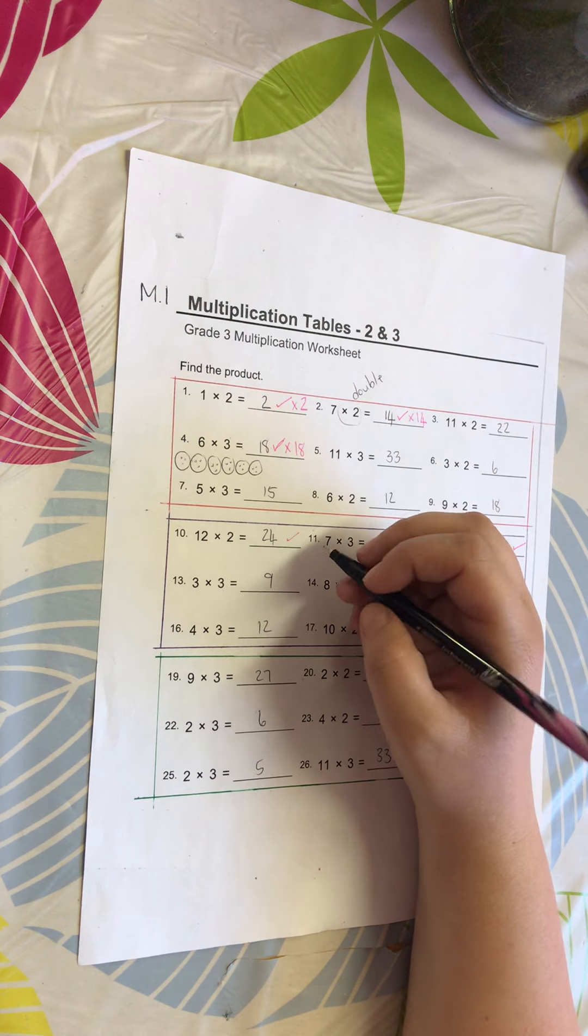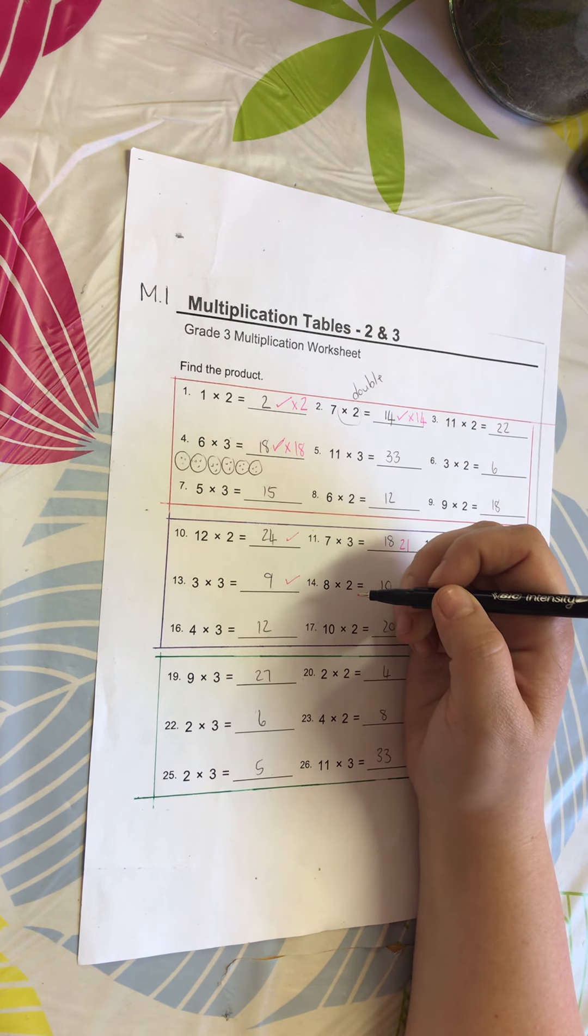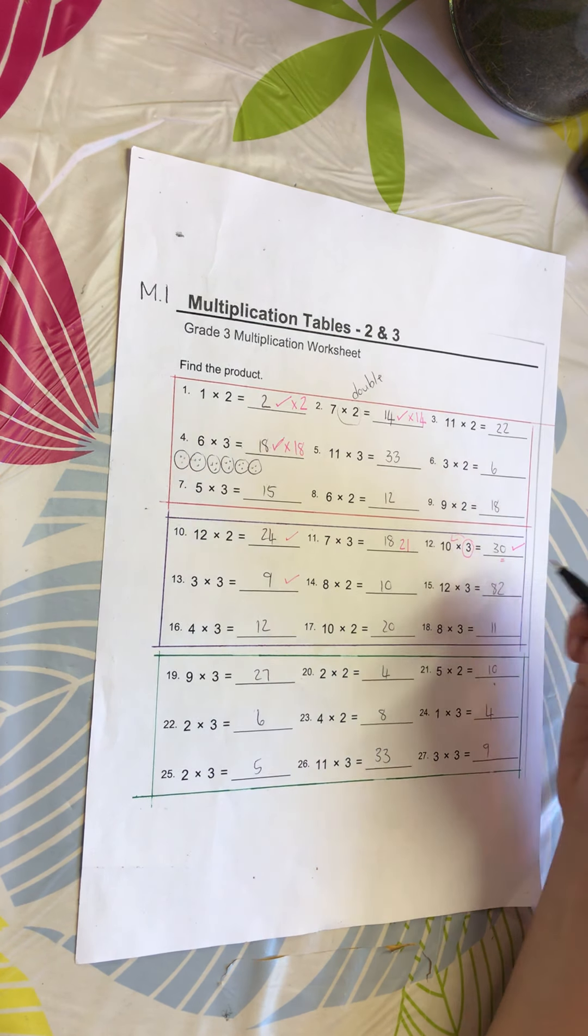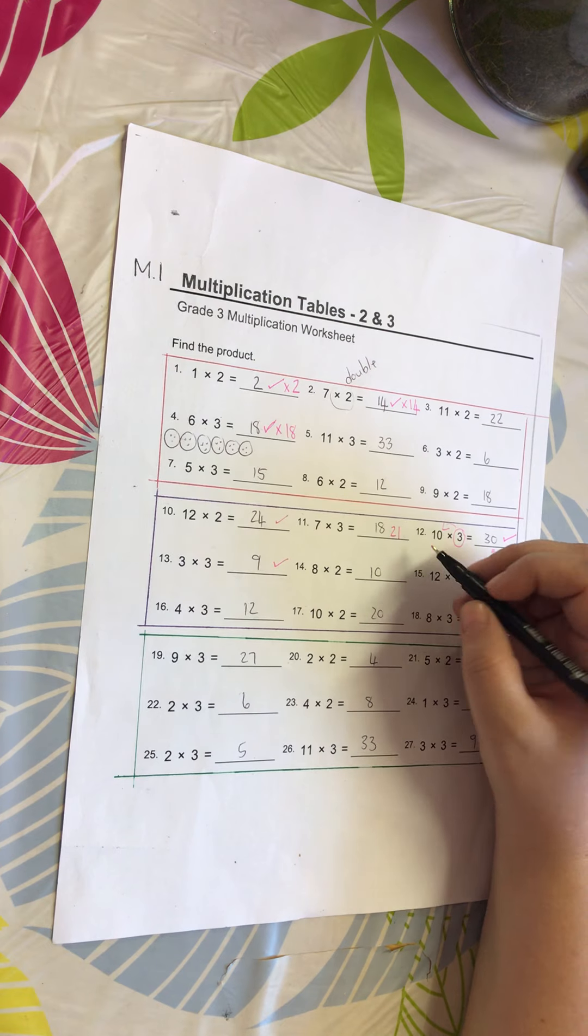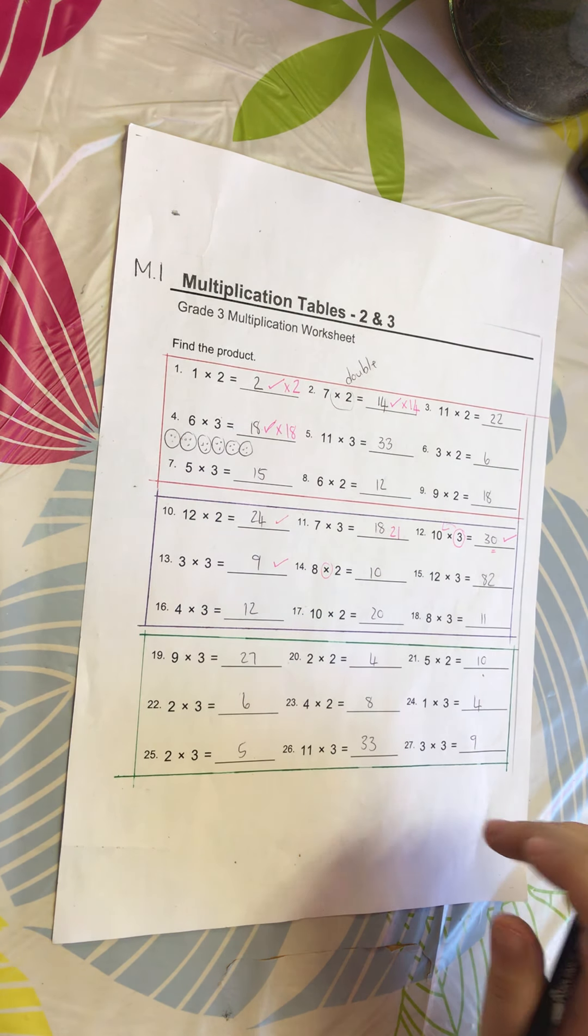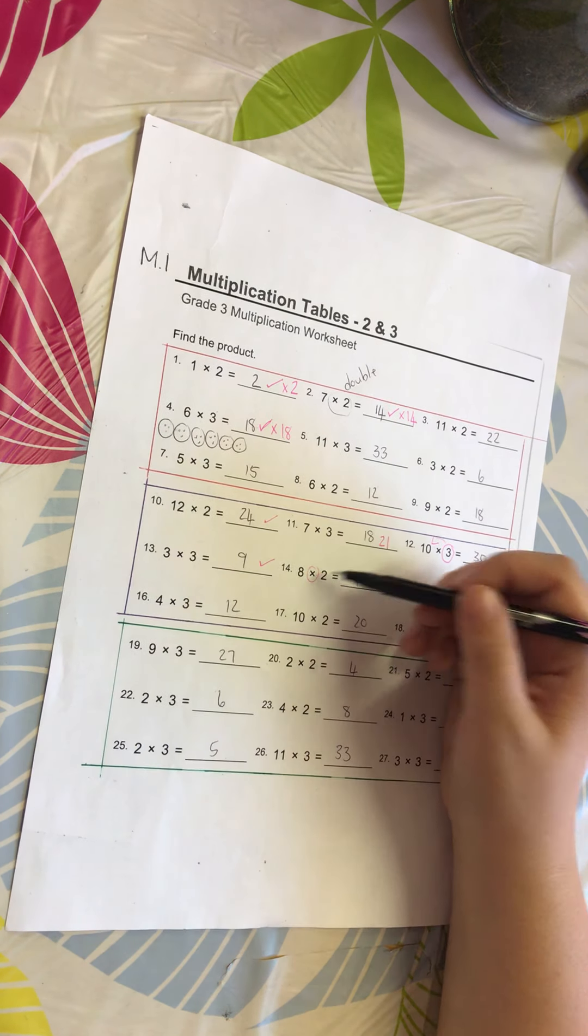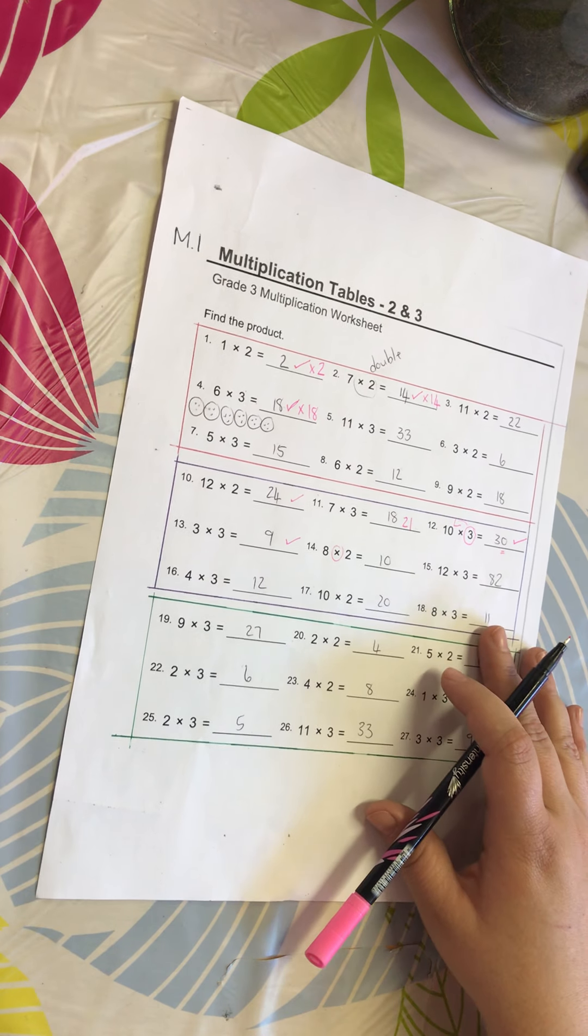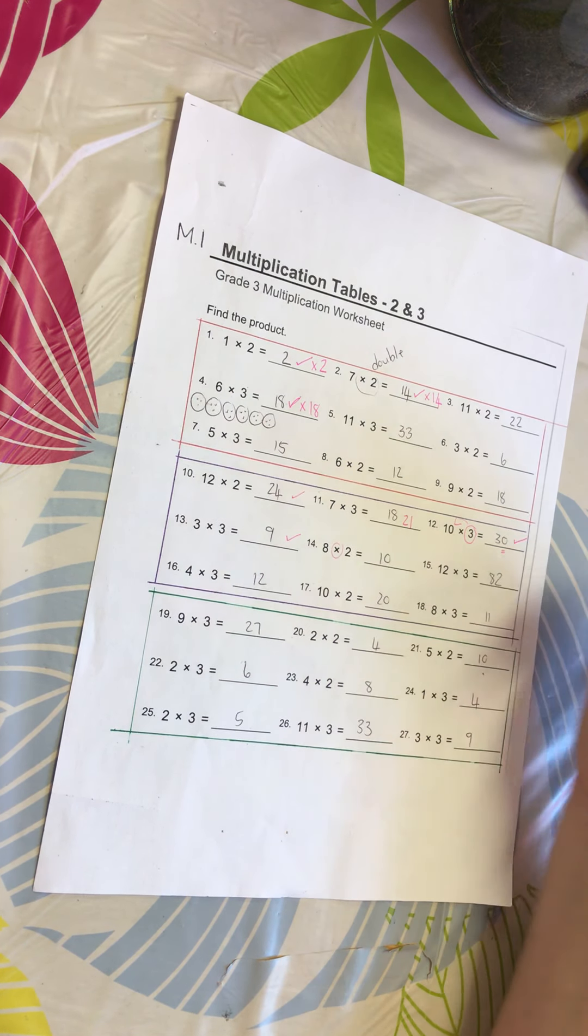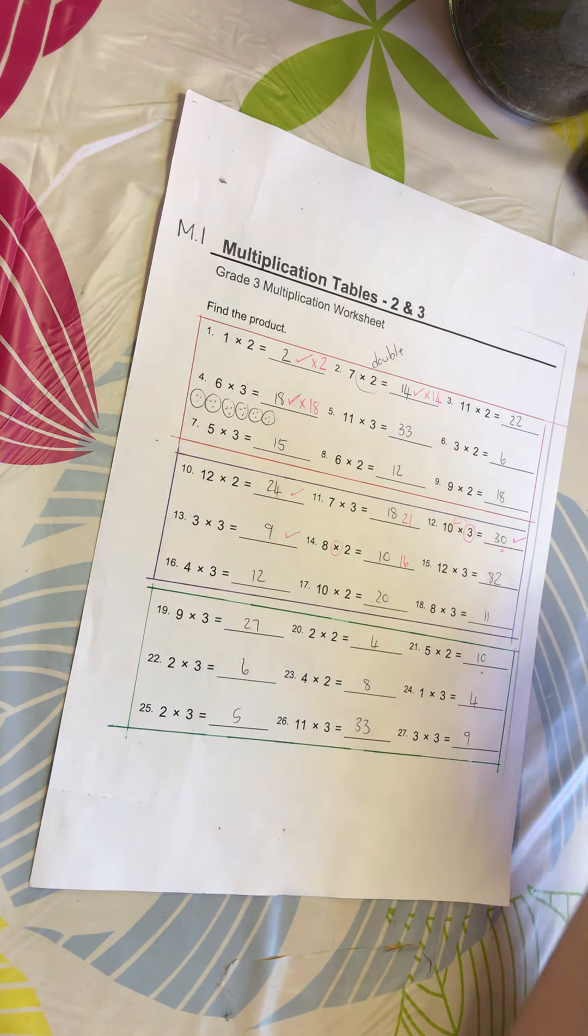Number 13: 3 times 3 is 9. 3 plus 3 is 6, 3 times 3 is 9. Number 14: 8 times 2 is not 10. Sometimes when you look quickly or your brain says 8 and 2, that's 10 because that's what we learned, but you must remember we are timesing this time, we are busy with our times table, so that means double 8 because it's times 2, which means the answer is actually 16.